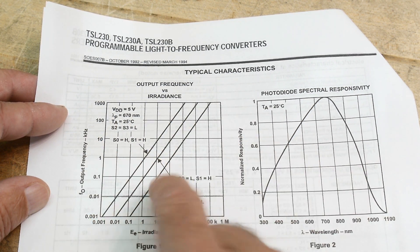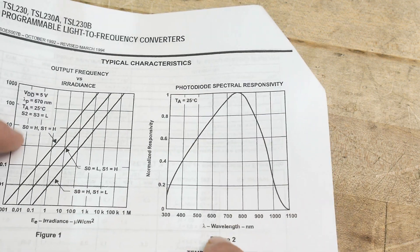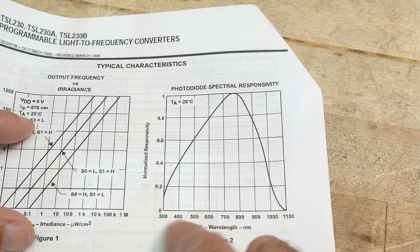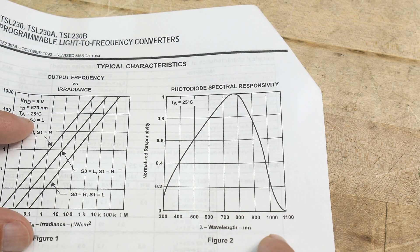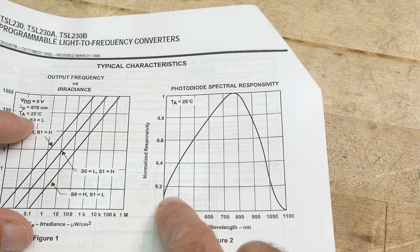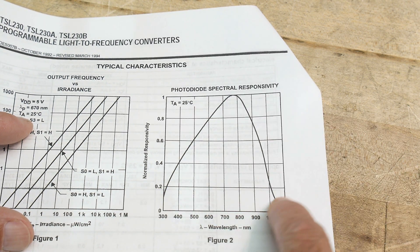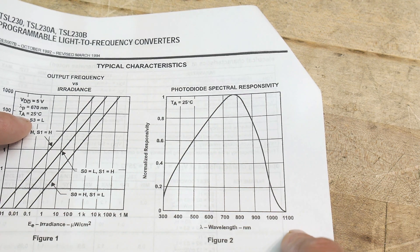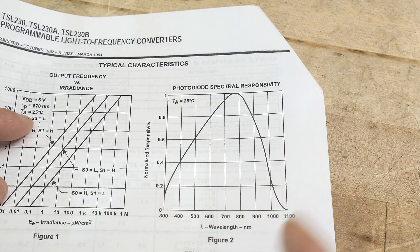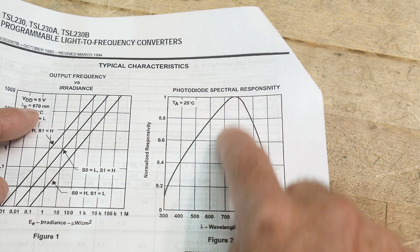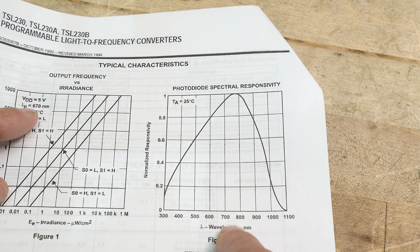This is the photosensitivity of the photodiode. So it can capture light from about 300 to 1000 nanometers. This is a typical silicon diode, so it's not equally sensitive to all wavelengths. It's going to be most sensitive to around 750 nanometers.